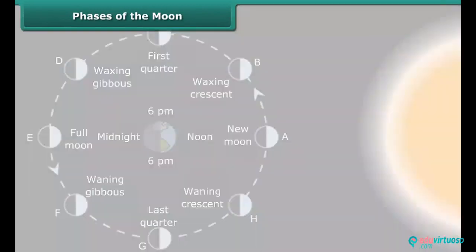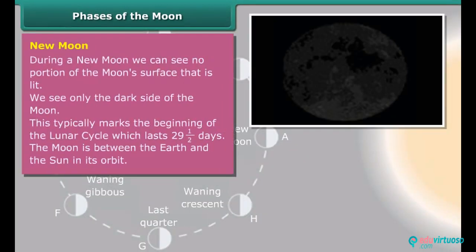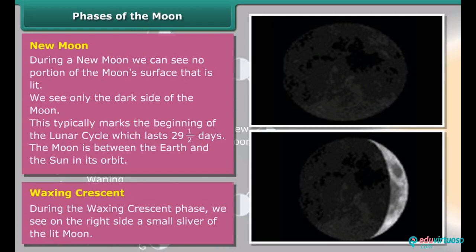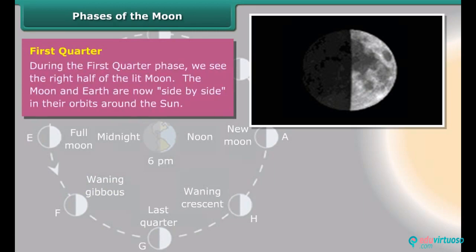Phases of the Moon. New Moon: During a new Moon, we can see no portion of the Moon's surface that is lit. We see only the dark side of the Moon. This typically marks the beginning of the Lunar cycle which lasts 29.5 days. The Moon is between the Earth and the Sun in its orbit. Waxing Crescent: During the Waxing Crescent phase, we see on the right side a small sliver of the lit Moon. First Quarter: During the First Quarter phase, we see the right half of the lit Moon. The Moon and Earth are now side by side in their orbits around the Sun.